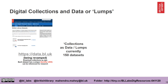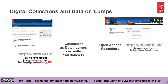You may want to download a large collection instead of a single item. You can do this via data.bl.uk. Currently we have 150 datasets. It's very simple to use — you can just download the entire collection as a big zip file. They're also available on our open access repository.